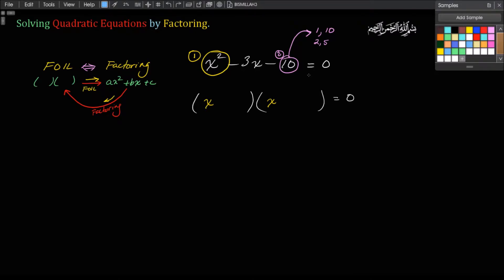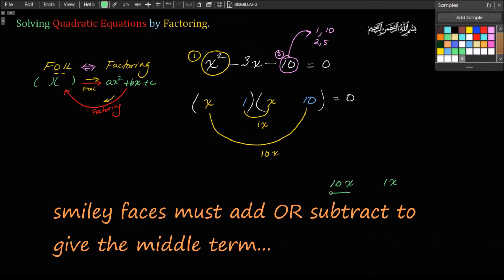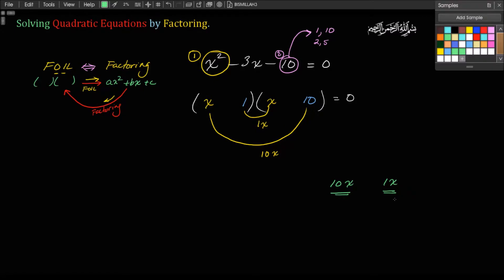The question is which combination to use. Try 1 and 10: make the smiley faces for the outer and inner products. The outer product is x times 10, or 10x, and the inner product is 1x. These two must add or subtract to give the middle term. Is there any way of adding or subtracting 10x and 1x to give 3x? No, so this does not work.